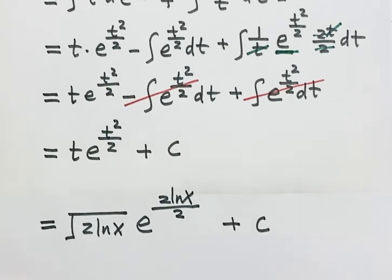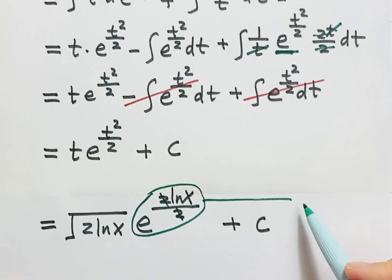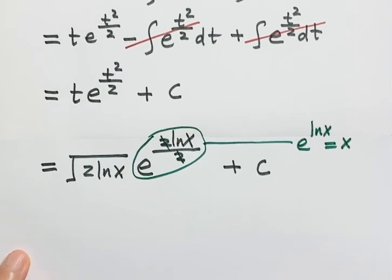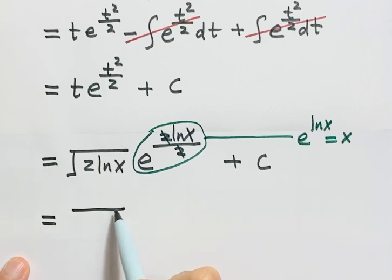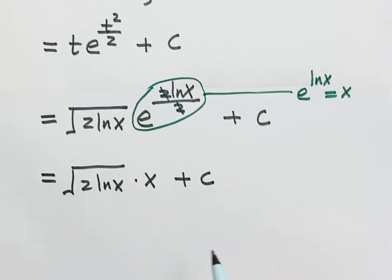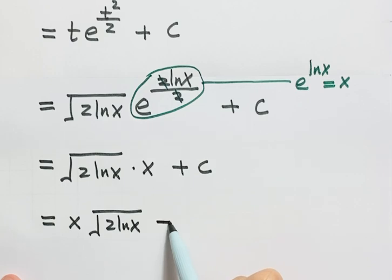So now let's see: 2 and 2 cancel, so we have e to the log x, and this just equals x. So then here we have square root of 2 log x times x, plus constant C. Or you can put x to the front: x times square root of 2 log x, plus constant C. So that is the answer for this question.